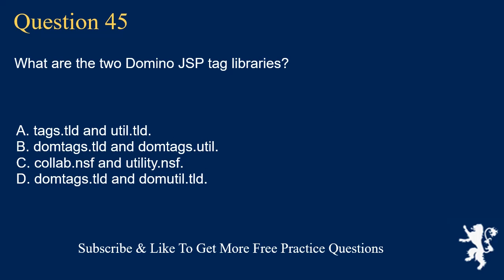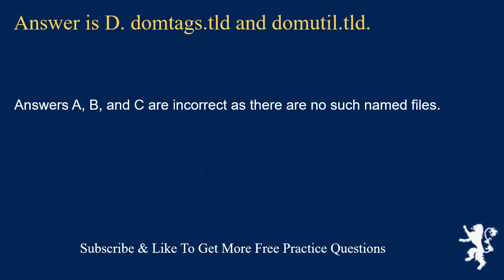Question 45. What are the two Domino JSP tag libraries? Tags.tld and util.tld. Dometags.tld and dometags.util. Collab.nsf and utility.nsf. Dometags.tld and domutal.tld. Answer is D: Dometags.tld and domutal.tld. Answers A, B, and C are incorrect as there are no such named files.